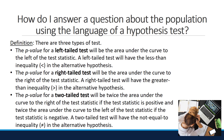The further a test statistic is from the center of the distribution, the smaller the p-value — this holds true for normal distributions, though for other distributions it may not. The smaller the p-value, the greater the evidence against the null hypothesis.